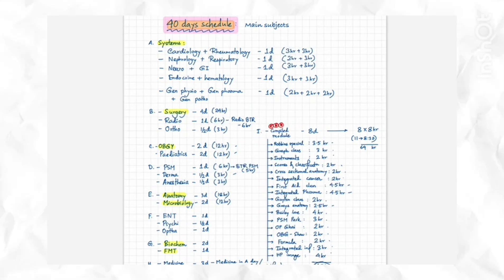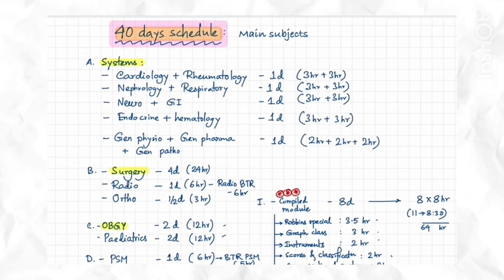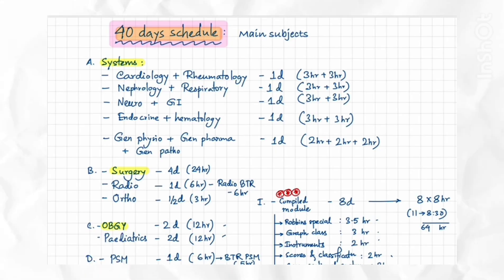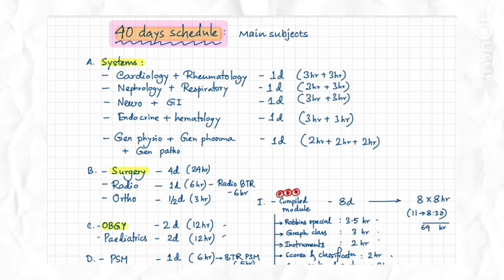Here is the 40-day schedule. I start with systems and have allotted two systems every day — for example, Cardiology and Rheumatology on Day 1, Nephrology and Respiratory on Day 2, Neurology and GI on Day 3. On Day 5 I've allotted two hours for General Physio, General Pharma, and General Patho.